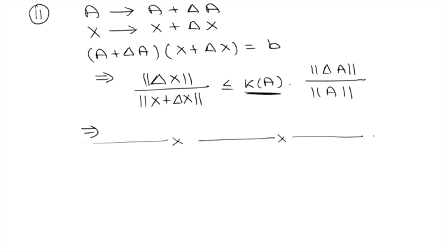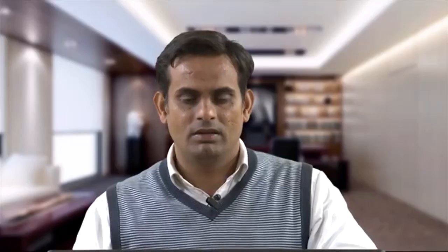If the condition number is near about 1, then a small change multiplied with an entry close to 1 will give you a small change delta x. In this lecture we have learnt what ill-conditioned systems are, what the condition number is, what is the relation between condition number and singular values, and we have investigated why the system becomes ill-conditioned when we have a large condition number. In the next lecture we will learn how to solve such ill-conditioned systems by defining a proper regularization term. Thank you very much.